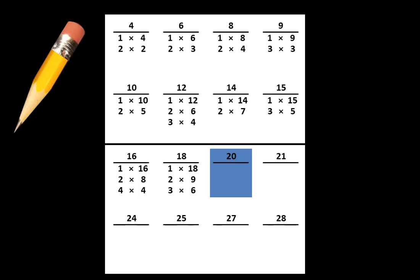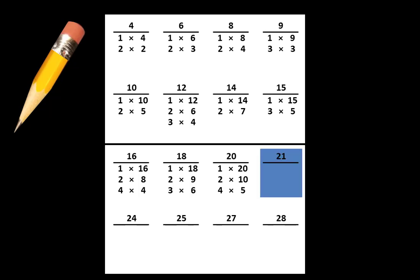Let's move to 20. Under 20, write 1 x 20. We know that 1 x 20 is equal to 20 x 1. Also write 2 x 10, which we know is equal to 10 x 2. Also write 4 x 5, which we know is equal to 5 x 4. Let's move to 21. Under 21, write 1 x 21. We know that 1 x 21 is equal to 21 x 1. Also write 3 x 7, which we know is equal to 7 x 3.